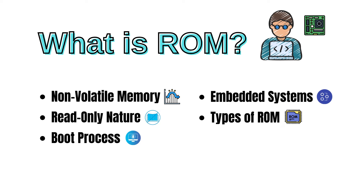There are different types of ROM. Mask ROM, called MROM, has data permanently written during the manufacturing process, and it cannot be modified. Programmable ROM, called PROM, allows users to program data onto the ROM chip once, but the data is then fixed and cannot be changed.